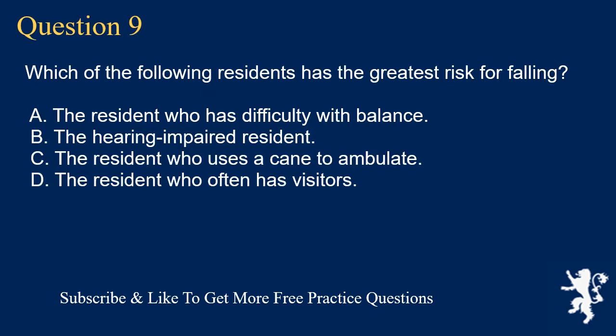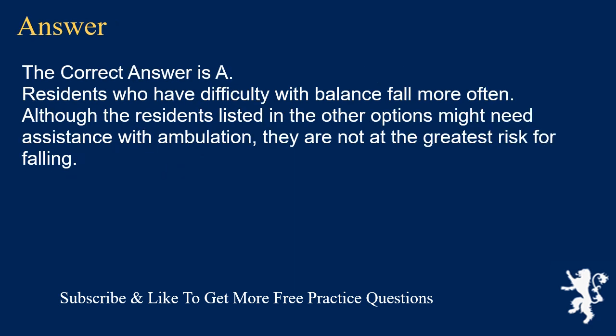Question 9. Which of the following residents has the greatest risk for falling? A. The resident who has difficulty with balance. B. The hearing impaired resident. C. The resident who uses a cane to ambulate. D. The resident who often has visitors. The correct answer is A. Residents who have difficulty with balance fall more often. Although the residents listed in the other options might need assistance with ambulation, they are not at the greatest risk for falling.